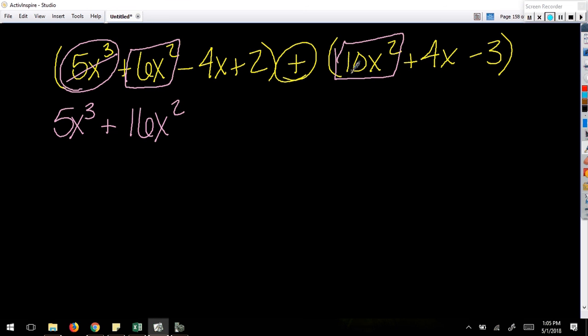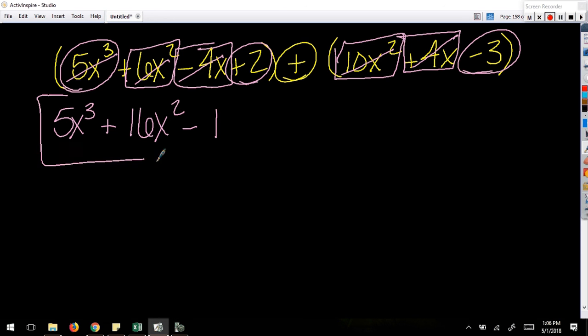I tend to cross mine out whenever I've used them so I know I'm done with them. I've already combined them and they don't get in my way of anything else. So now I'm going to move on to the x's, in which case I've got a -4x and a positive 4x, which conveniently enough, -4 and 4 give me 0, so this cancels out for me. For constants, I have a 2 and a -3, which I can add together to get -1.